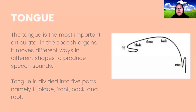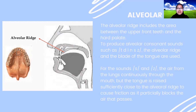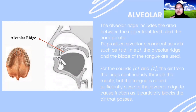Next, the fourth articulator is the alveolar ridge. The alveolar ridge includes the area between the upper front teeth and the hard palate, as we can see in the picture. To produce alveolar consonant sounds, the alveolar ridge and the blade of the tongue are used. For the fricative sound, air from the lungs passes continuously through the mouth but the tongue rises sufficiently close to the alveolar ridge to cause friction.